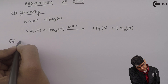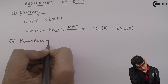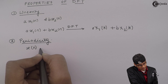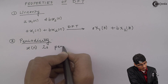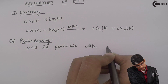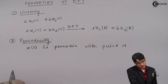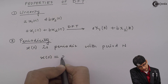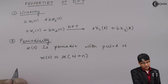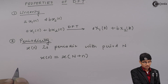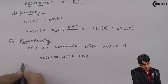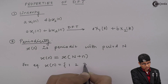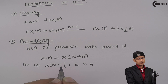The second property is the periodicity property. If x(n) is periodic with period N, this can be mathematically written as x(n) = x(n+N). That means after period N, whatever sample comes is the same as x(n). For example, if I have a signal x(n) = {1, 2, 3, 4} and it is periodic with period N=4.